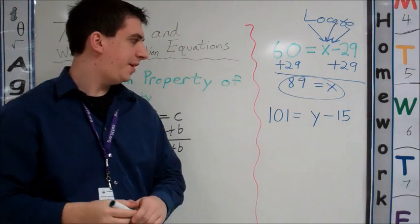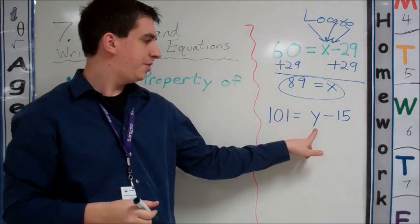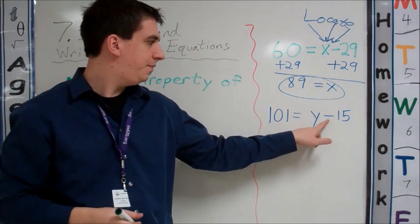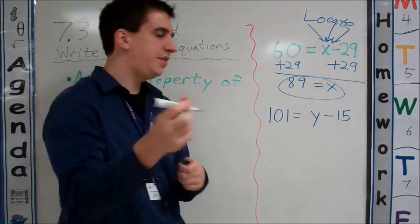In our next example, we have 101 equals Y minus 15. Our variable is right here, the Y, the unknown, minus 15. What's the opposite of minus 15? Let's add 15.